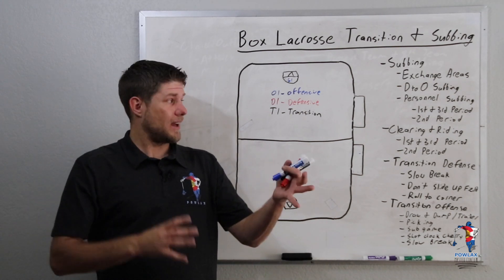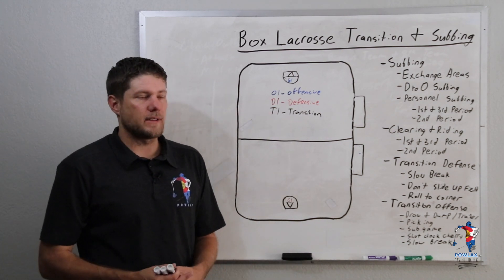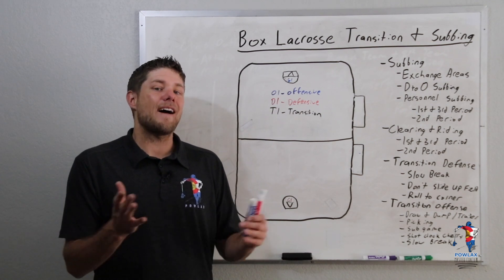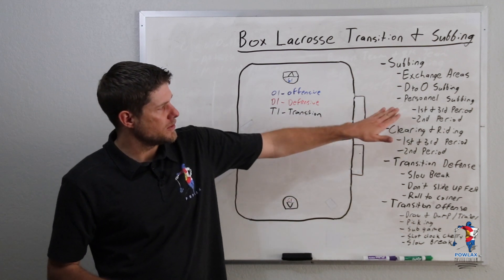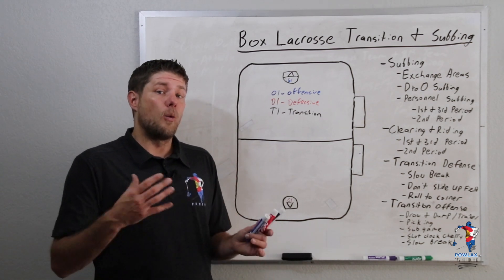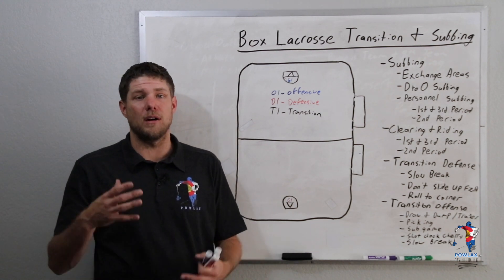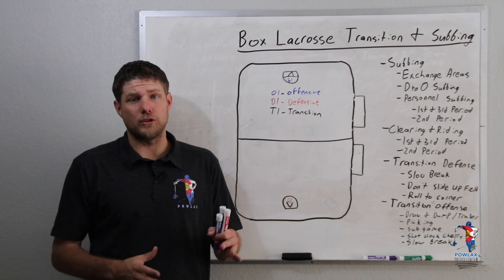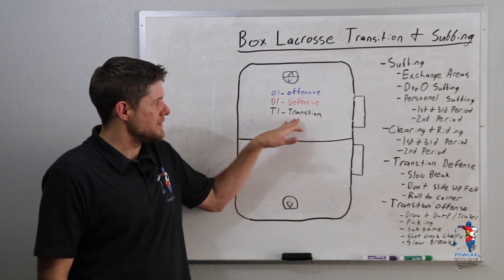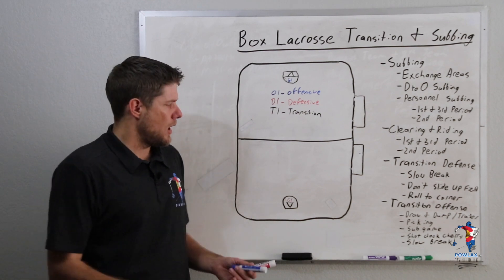Before we get into our riding and clearing, let's go over what our personnel is going to be. We've got offensive personnel who are obviously going to play offense, defensive personnel who will be playing defense, and then we've got transition players who are going to be defensive personnel but have the best sticks to move the ball up the floor. If we're using personnel subbing, we want to get three defensive players who only play defense on the floor with two transition players, so the transition players can clear the ball while the defensive players sub off.